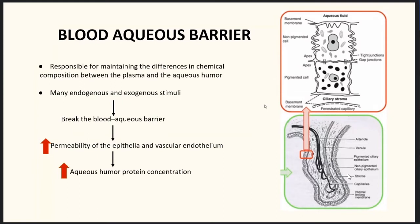Electrolytes: chloride concentration in the anterior chamber is more than plasma, and plasma concentration is more than the posterior chamber. Bicarbonate concentration in the posterior chamber is greater than the anterior chamber; in the anterior chamber it is greater than plasma. Sodium level equals plasma. The blood-aqueous barrier is formed by the tight junctions of the non-pigmented epithelium and the endothelial cells of the capillaries of the iris. It is responsible for maintaining chemical differences between plasma and aqueous humor. Inflammation and trauma break down this barrier, increasing permeability of the epithelium and vascular endothelial cells.